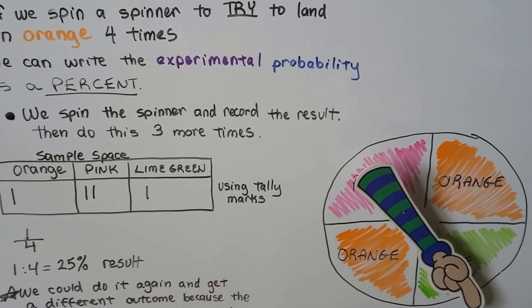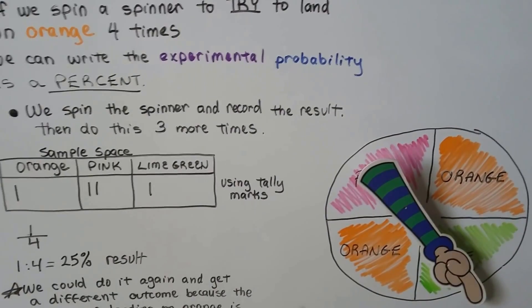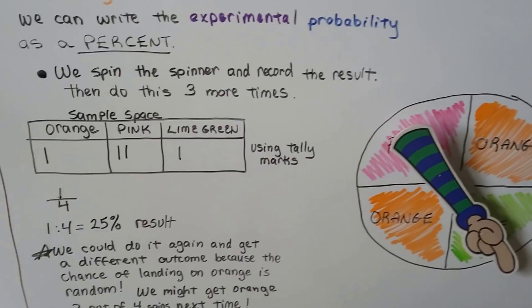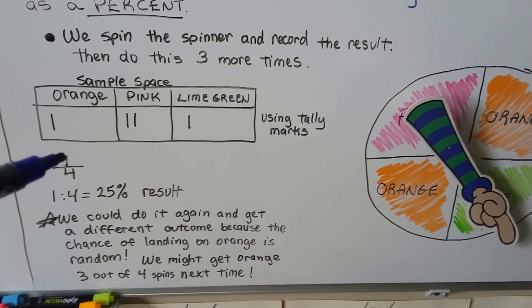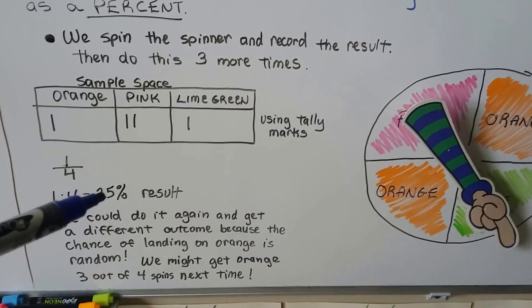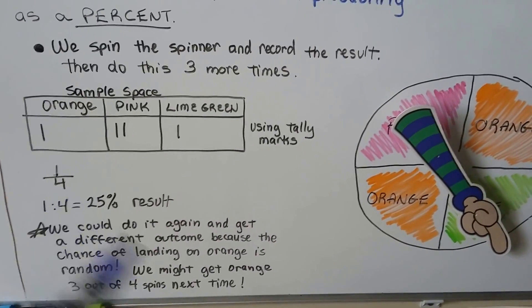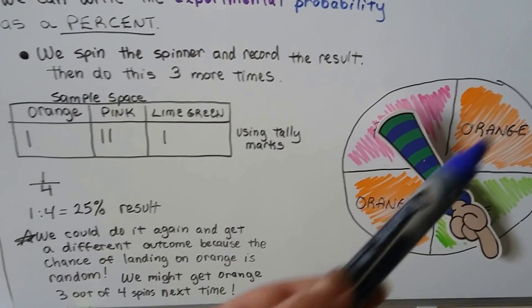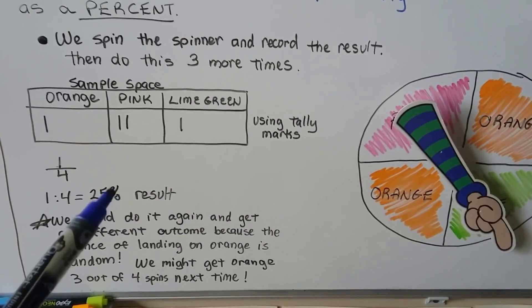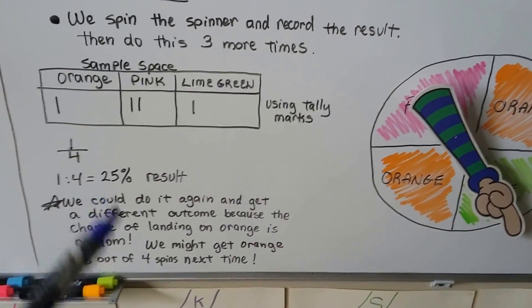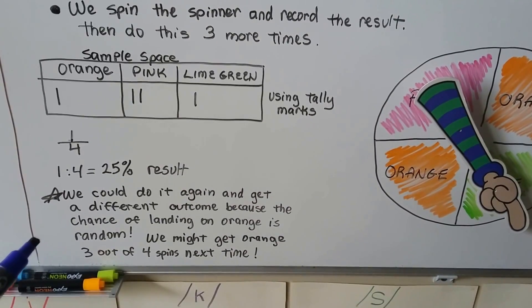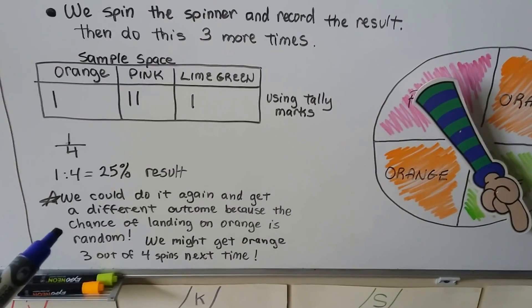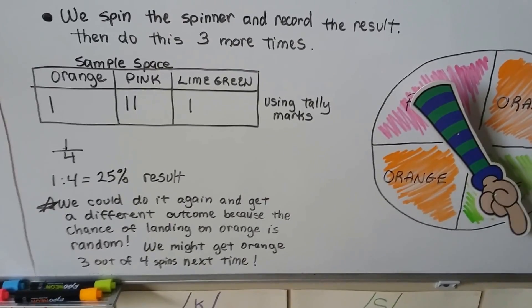The sample space is the set of all possible outcomes for an event. So we had a pink, an orange, or a green, and I only landed on orange once. That's one out of four times. That was a 25% result. So even though the probability was that I had a 50% chance of landing on an orange, I only landed on it as a result 25% of the time. Now I could do it again and get a different outcome because the chance of landing on orange is random. We might get orange three out of four spins next time.